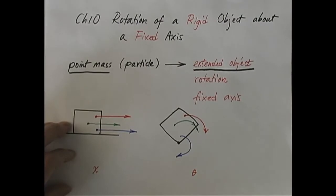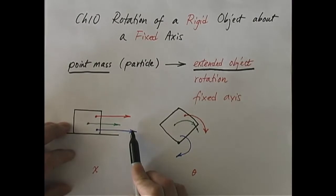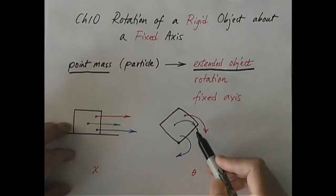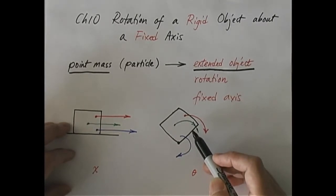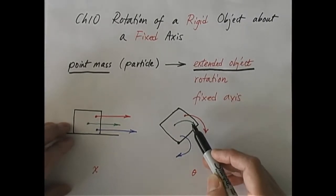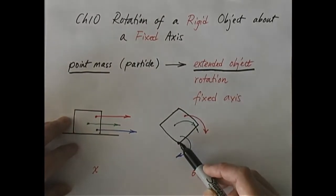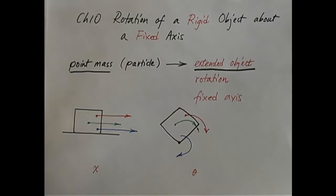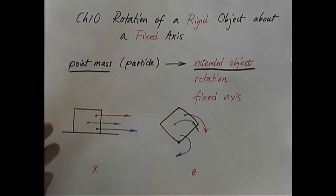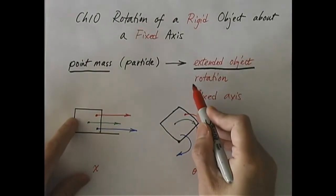What's the difference between an extended object and a point? For an extended object, not only can it move from place to place — that's called translational motion — but in addition it can also have rotation. It is meaningless to talk about a point rotating about itself, but it is meaningful to talk about an extended object rotating about a certain point. So we are now going to focus on the rotation of an extended object with finite shape and size, studying the simplest type of rotation first.